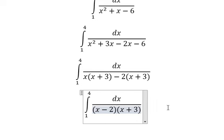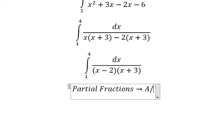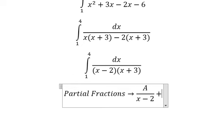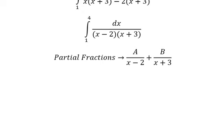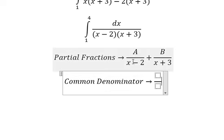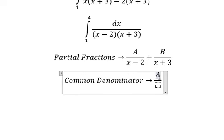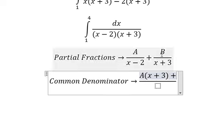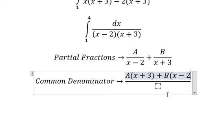So we have the integral from 1 to 4 of dx over (x-2)(x+3). For this one we can use partial fractions: A over x minus 2 plus B over x plus 3. Now we can do common denominator. In this one it is missing x+3, so capital A multiplied by x plus 3. And this one is missing x minus 2, so capital B multiplied by x minus 2.